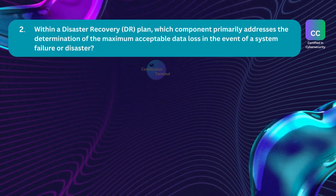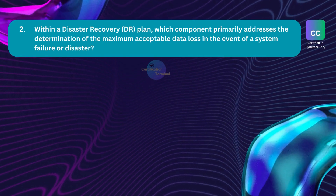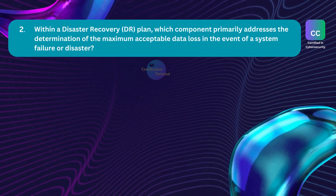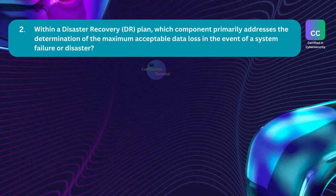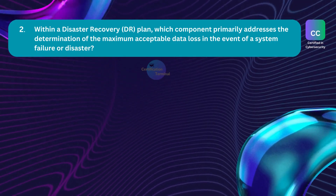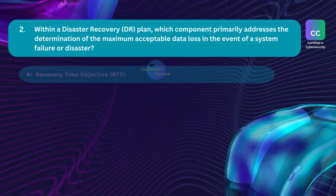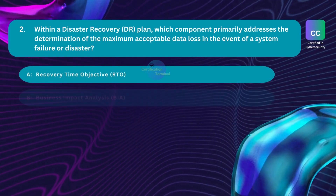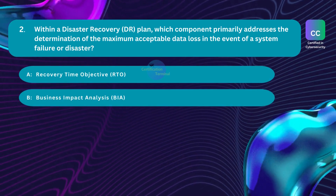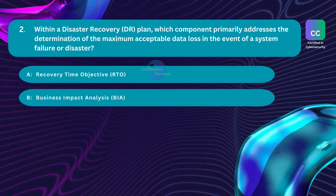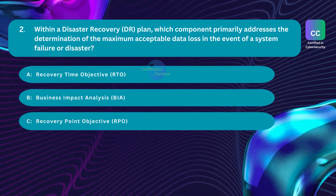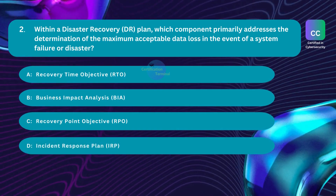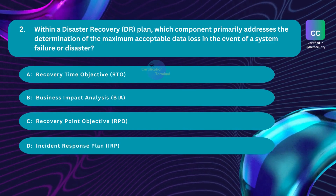Question number 2. Within a disaster recovery plan, which component primarily addresses the determination of the maximum acceptable data loss in the event of a system failure or disaster? Option A: recovery time objective, RTO. Option B: business impact analysis, BIA. Option C: recovery point objective, RPO. Option D: incident response plan, IRP.